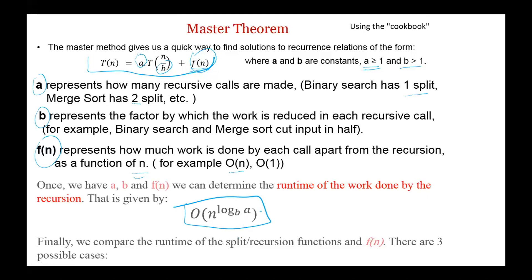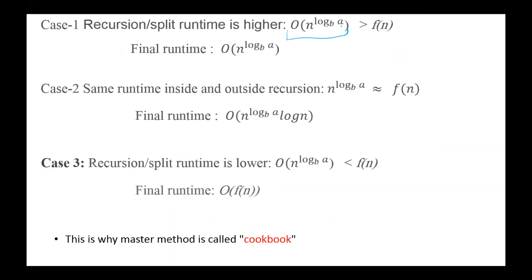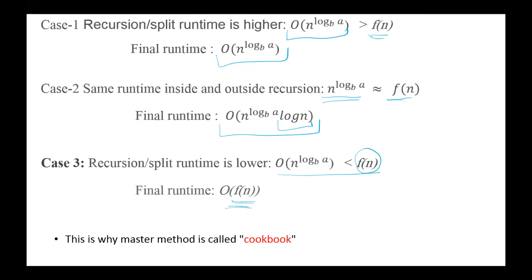In the master theorem, we first identify the parameters a, b, and f(n). After that, we determine the runtime of the work done by the recursion, given by the formula n^(log_b(a)), called the recursion split function. We then compare this with f(n) and have three cases. Case 1: if the recursion split runtime is greater than f(n), the complexity equals the recursion split function. Case 2: if they are equal, the complexity equals log(n) multiplied by the recursion split runtime. Case 3: if the recursion split runtime is less than f(n), the complexity equals f(n).